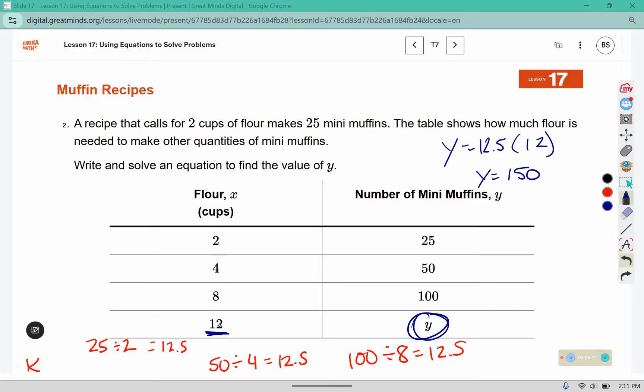So with 12 cups of flour, we can make 150 mini muffins.